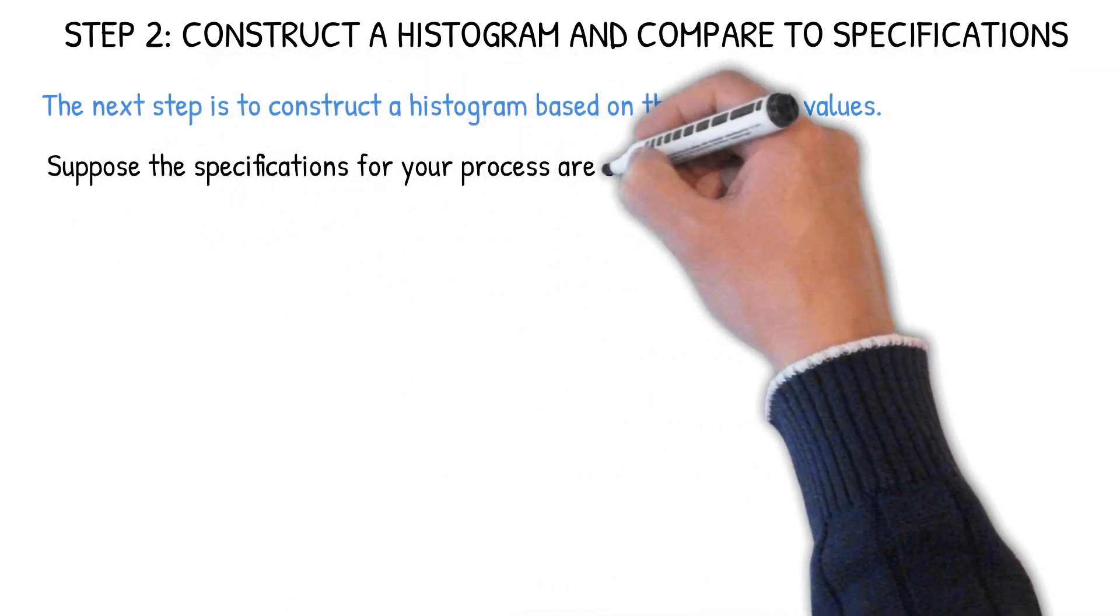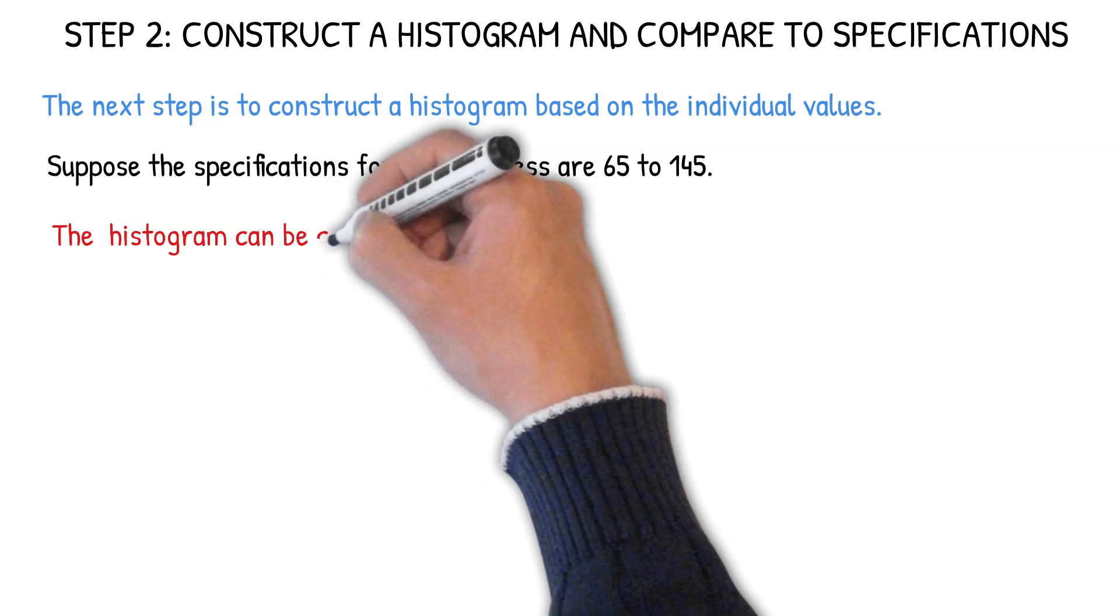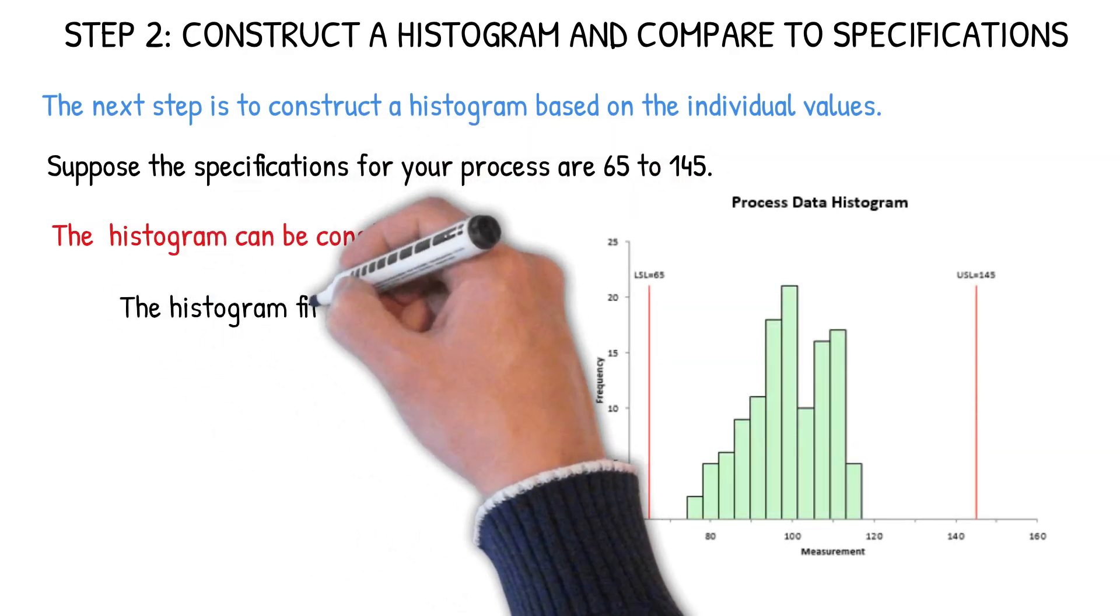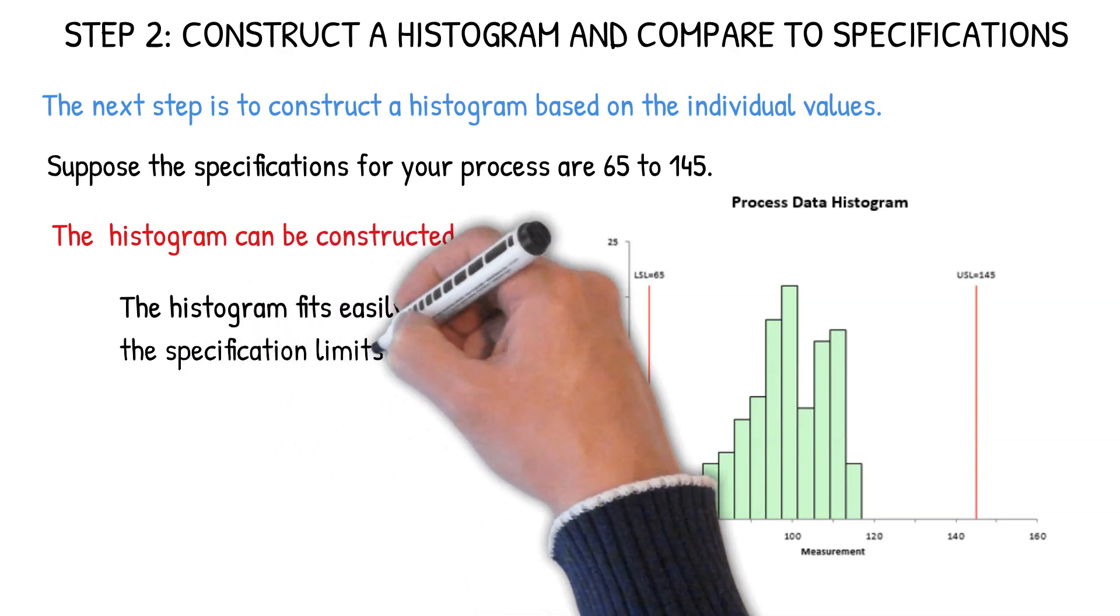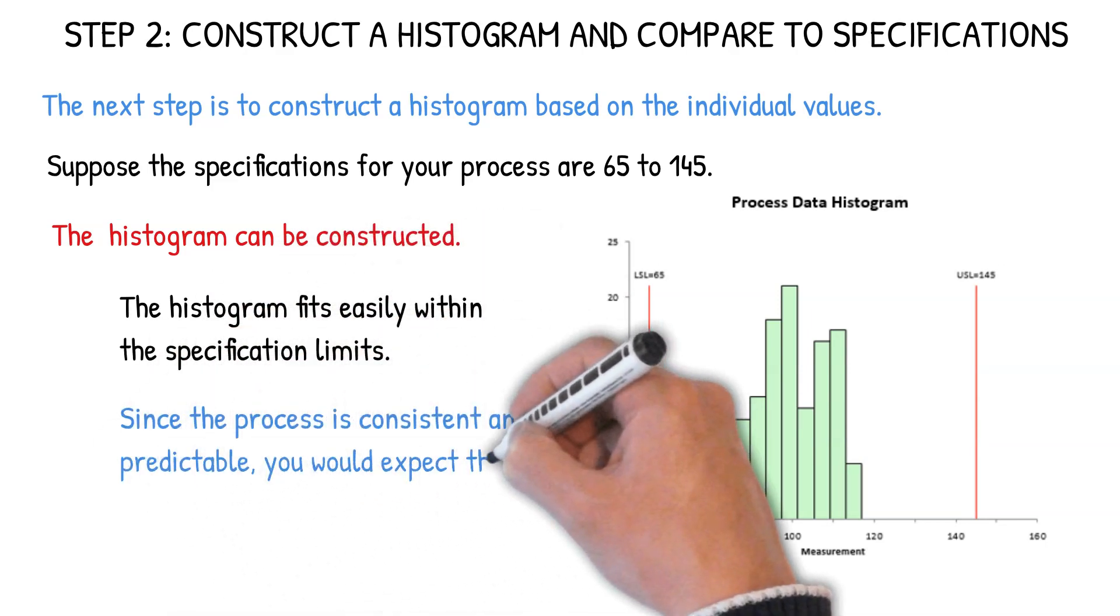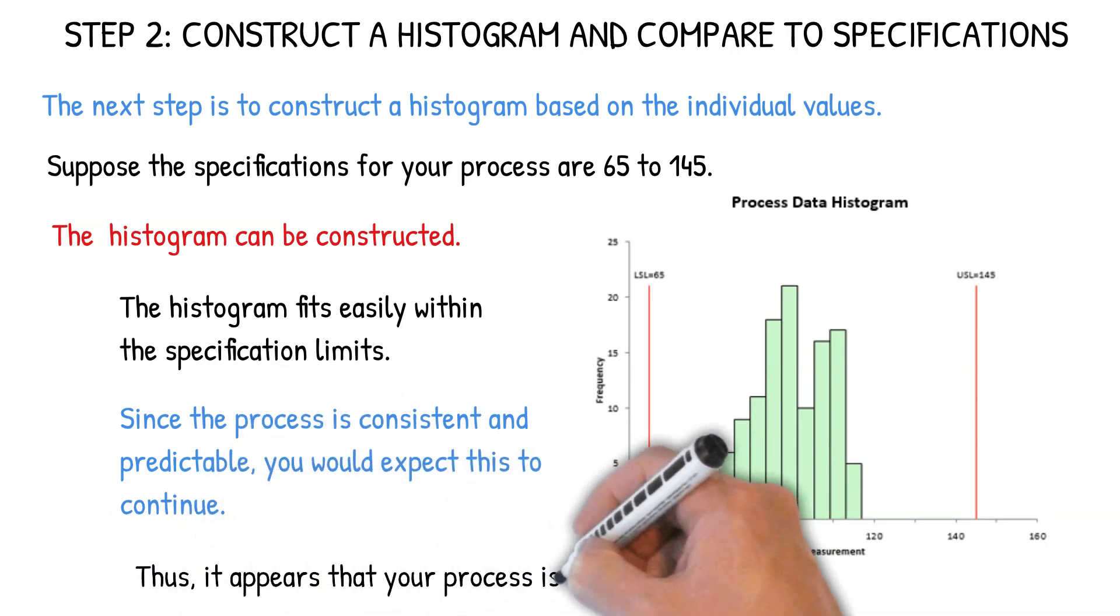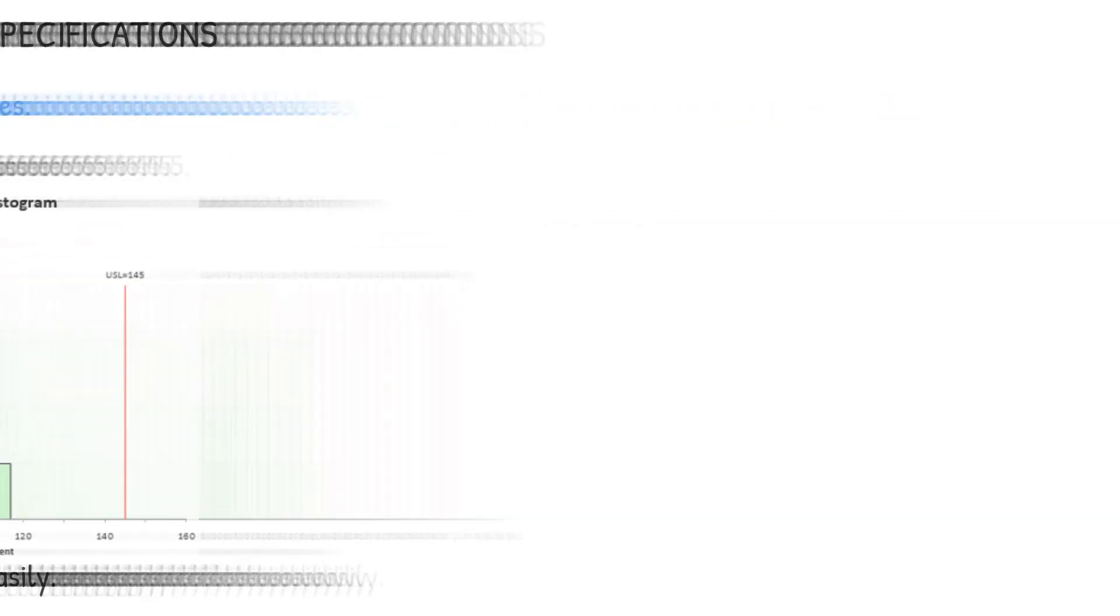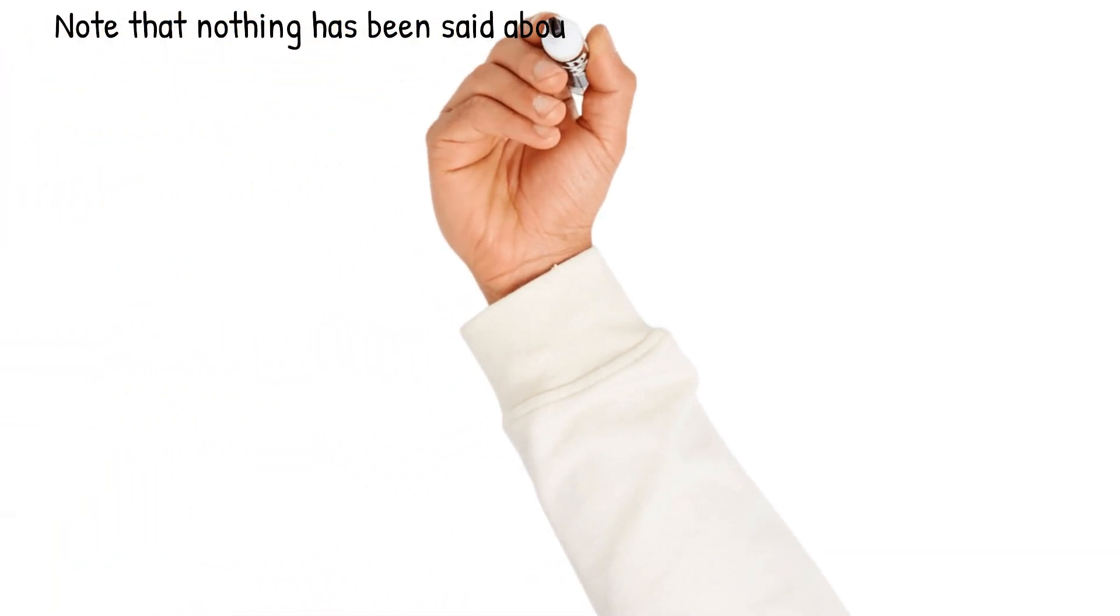Suppose the specifications for our process are 65 to 145. We construct the histogram as shown here from the data. You can see the histogram fits easily within the specification limits. And since the process is consistent and predictable, you're going to expect that to continue. So our process appears to be meeting specifications easily.